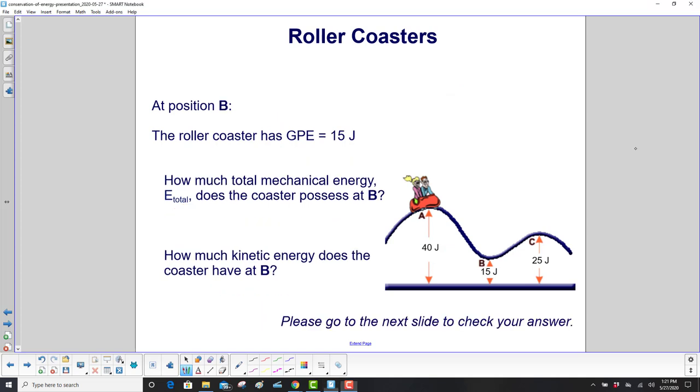Now the roller coaster does what a roller coaster does and goes down here to position B. At position B, it has 15 joules of gravitational potential energy. How much total mechanical energy, E_total, does it have at B? And then how much kinetic energy does it have at B? Work on that for a little bit and go to the next slide to check your answer.